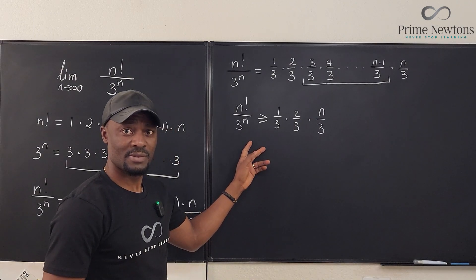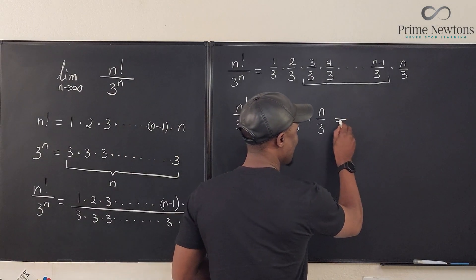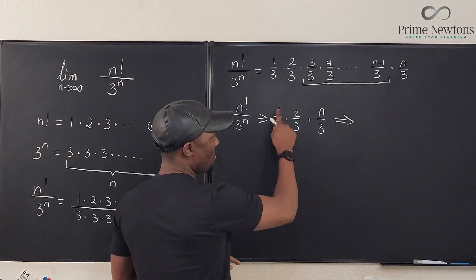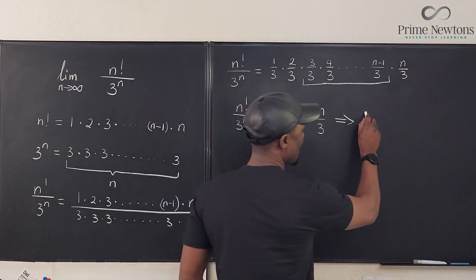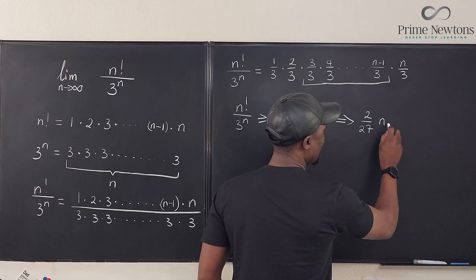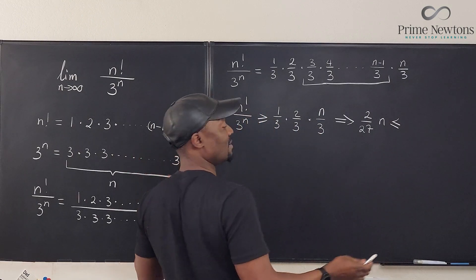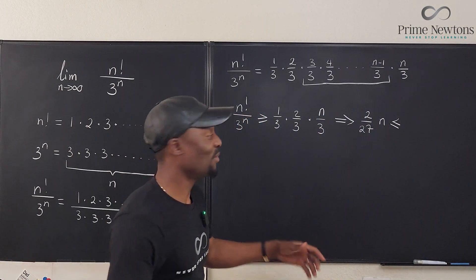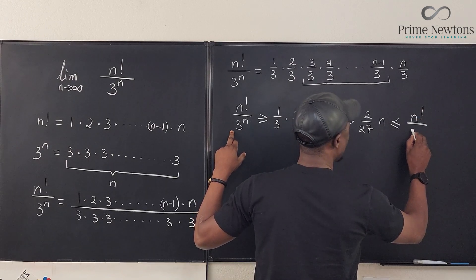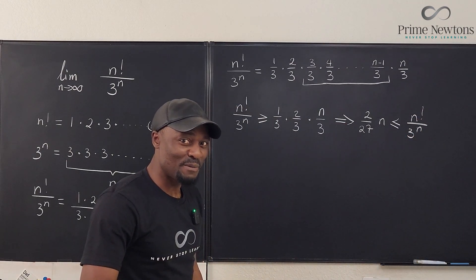Is this true? Yes, it is true. So this implies that if I multiply this out, what would it give me? 2 over 27. 2 over 27 n is definitely less than or in worst case scenario, it is equal to n factorial over 3 to the n. Now you can guess where I'm going with this.